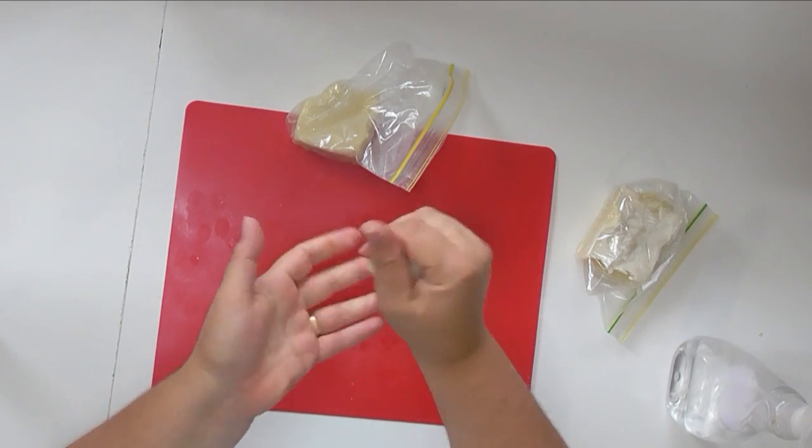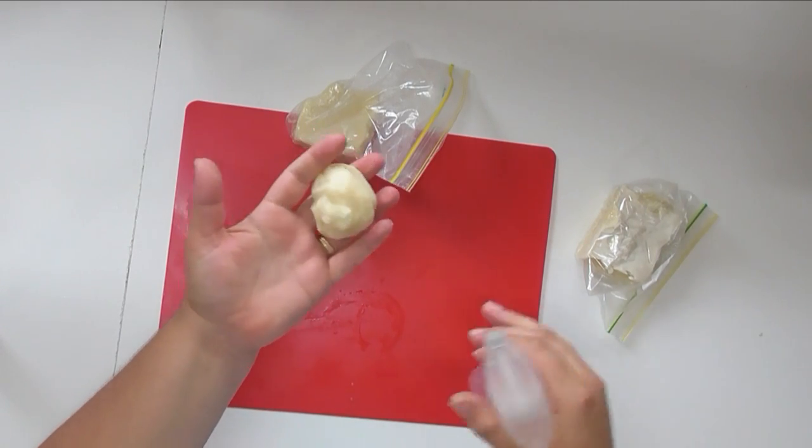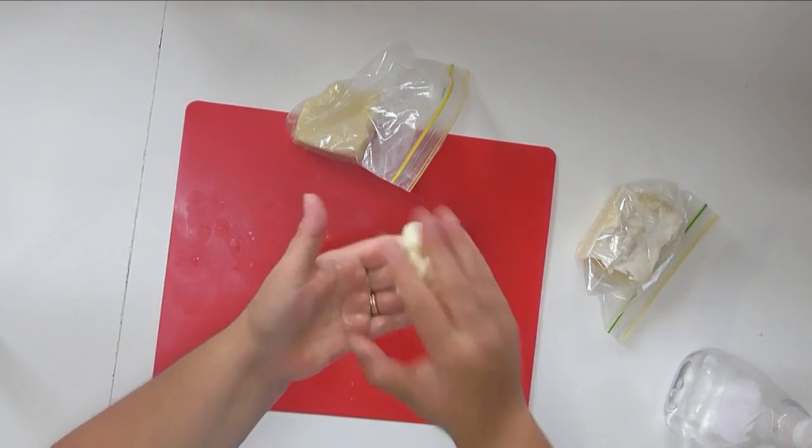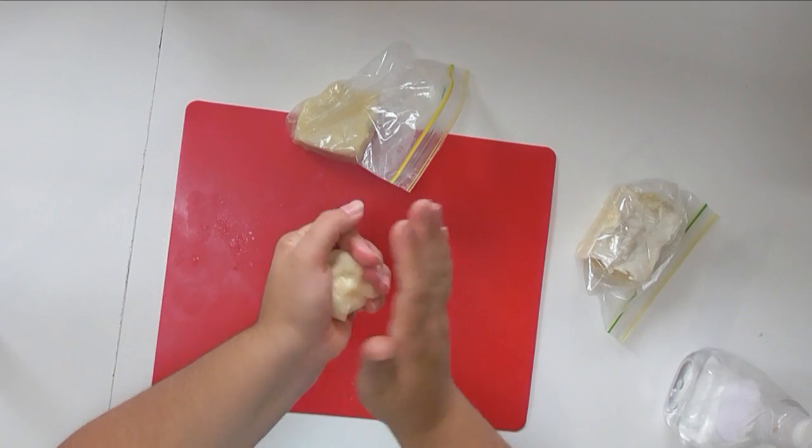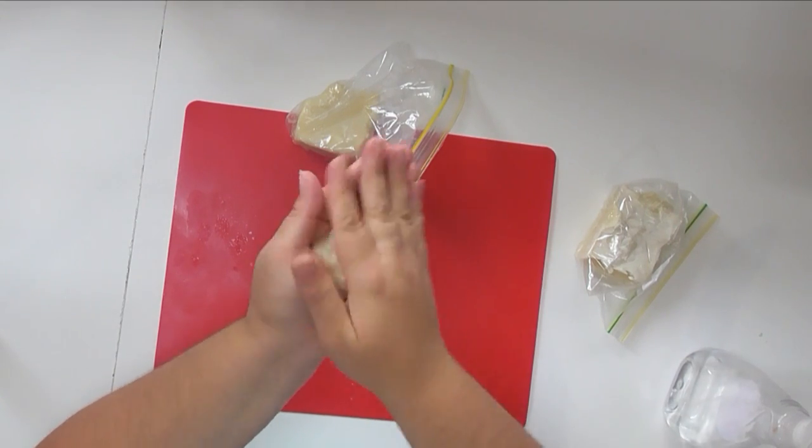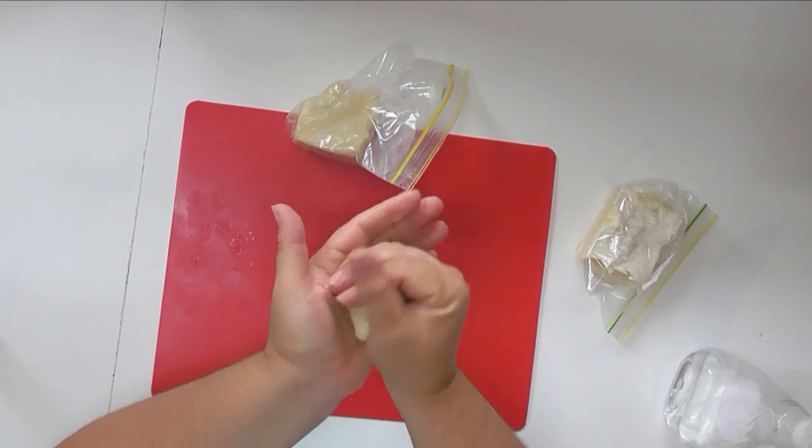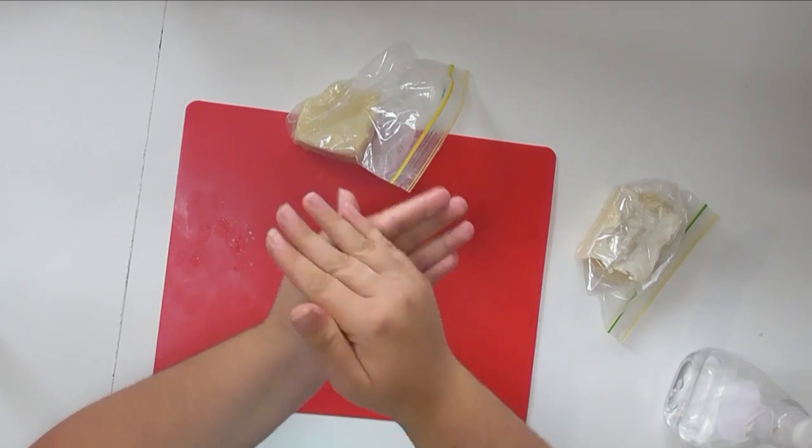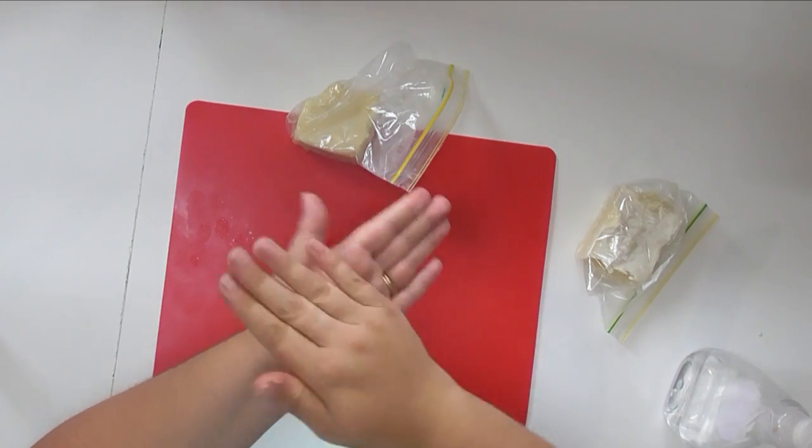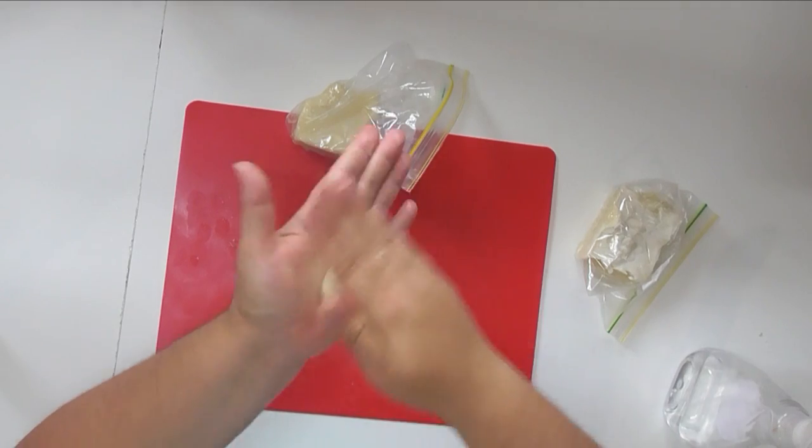I've just got a bit of rubbing alcohol here. I'm just going to spray my hands just to stop it from sticking to me. And what I'm going to do is roll these round into a nice round ball.